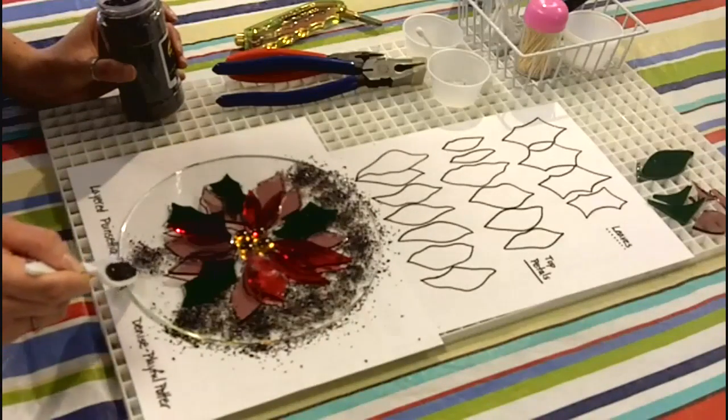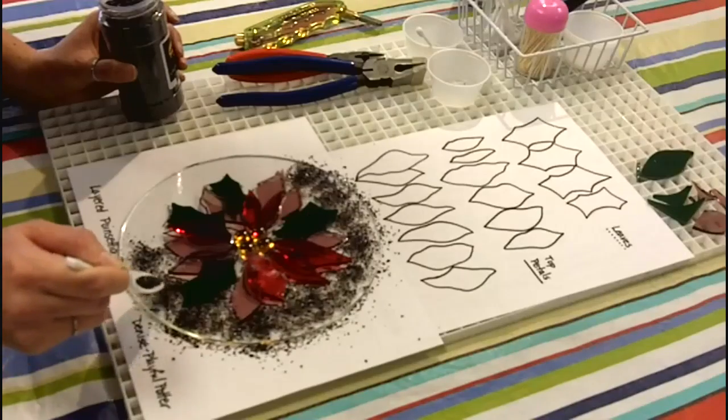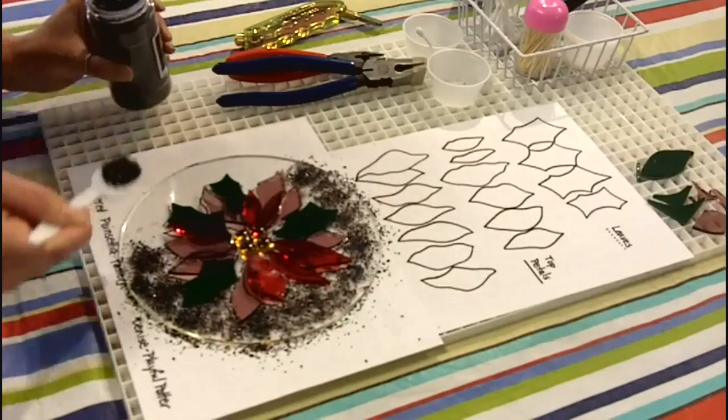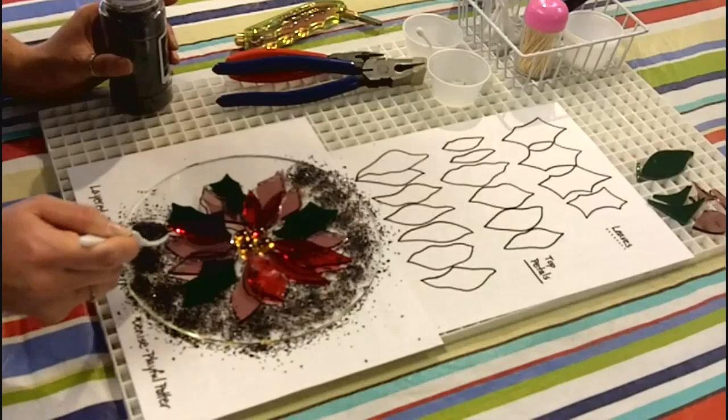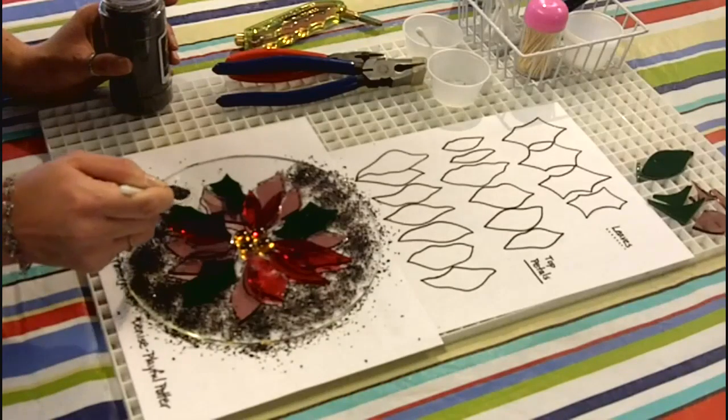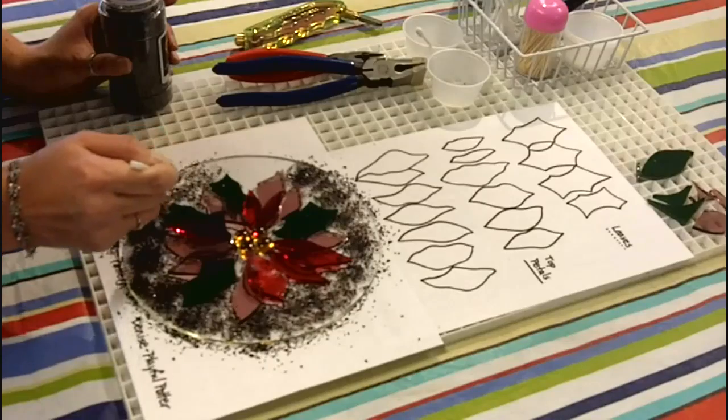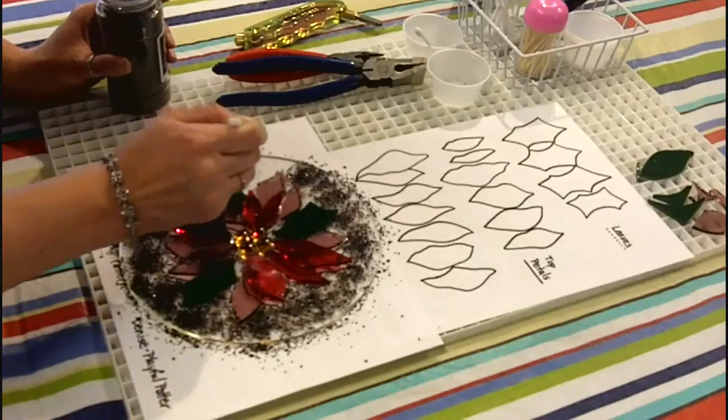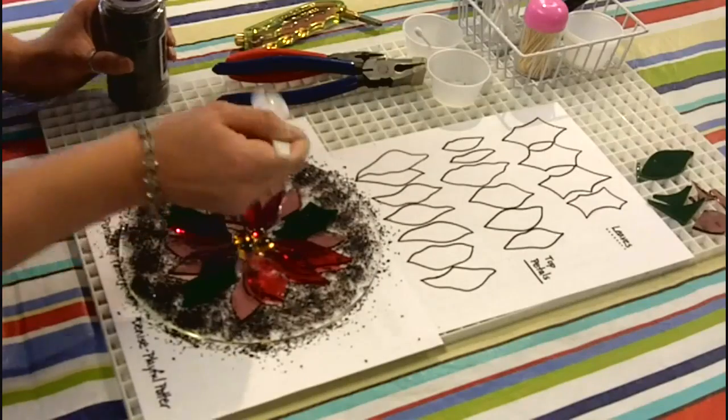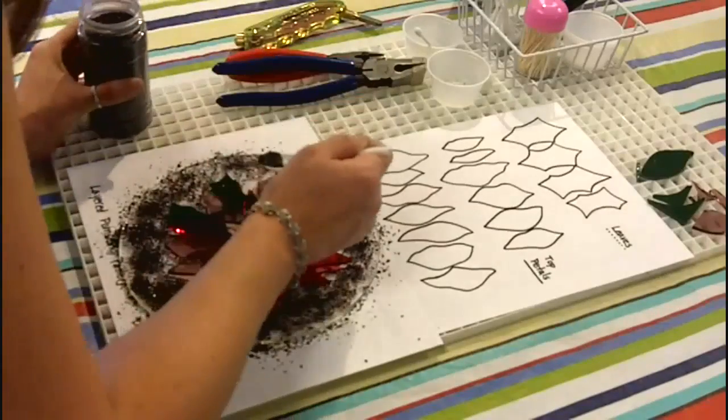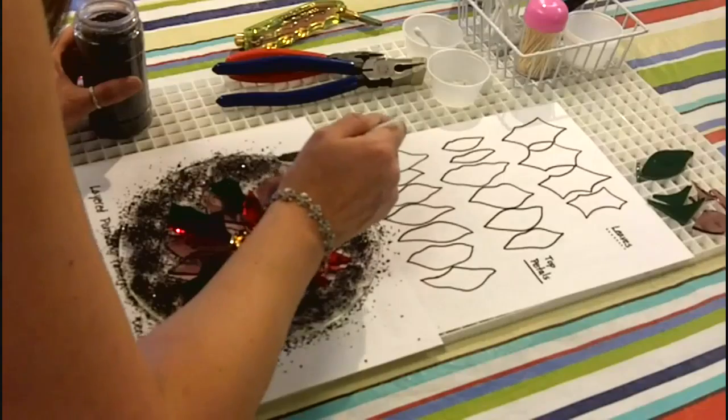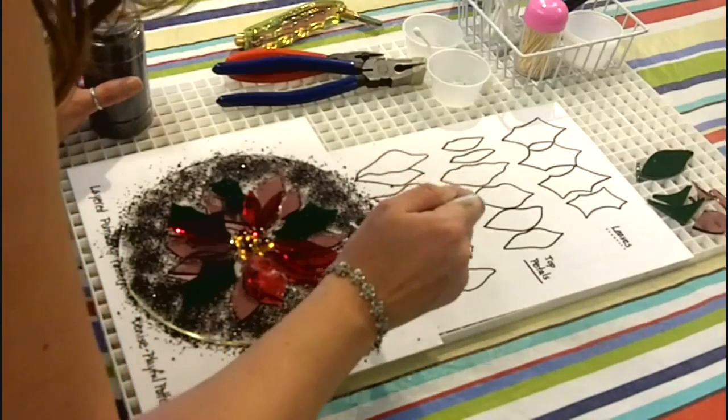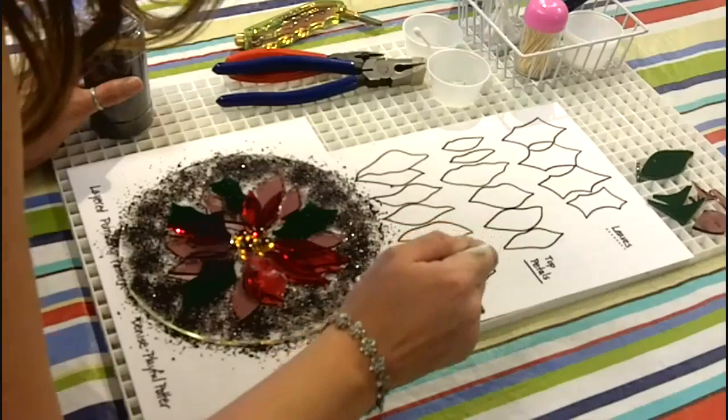Once we have all of the frit on, we're going to set it with hairspray. I'm not too worried if I get frit underneath or on my petals. I think it just gives the piece a little bit more of an organic feel. If you're really particular, you can use a paintbrush to pull that extra frit off your petals once you've finished sprinkling it all over the top. Kind of fill in here a little bit so you're even all the way around.